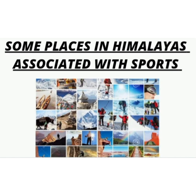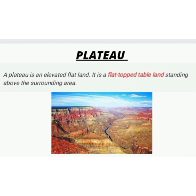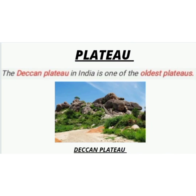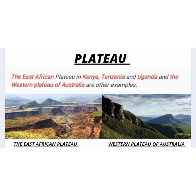Now we will study about plateaus. A plateau is an elevated flat land — it is a flat-topped tableland standing above the surrounding areas. A plateau may have one or more sides with steep slopes. The height of plateaus often varies from a few hundred meters to several thousand meters. Plateaus, like mountains, may be young or old. The Deccan Plateau in India is one of the oldest plateaus. The East African Plateau in Kenya, Tanzania and Uganda, and the Western Plateau of Australia are some examples.